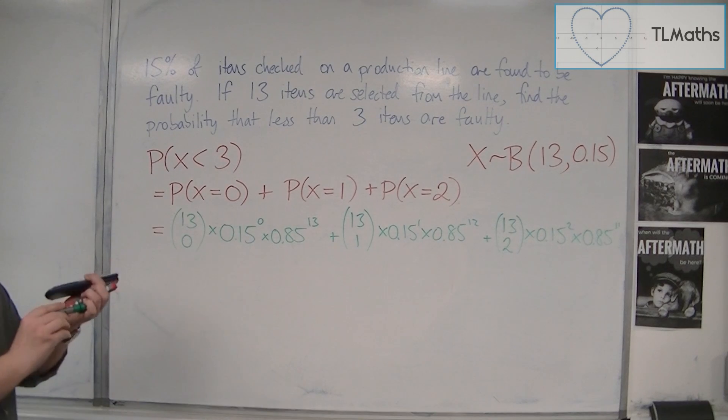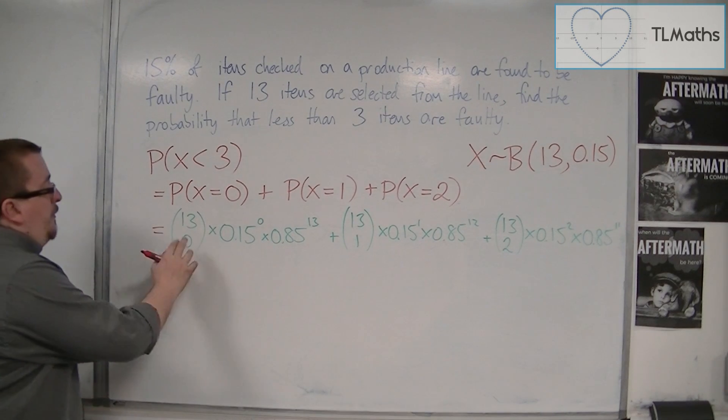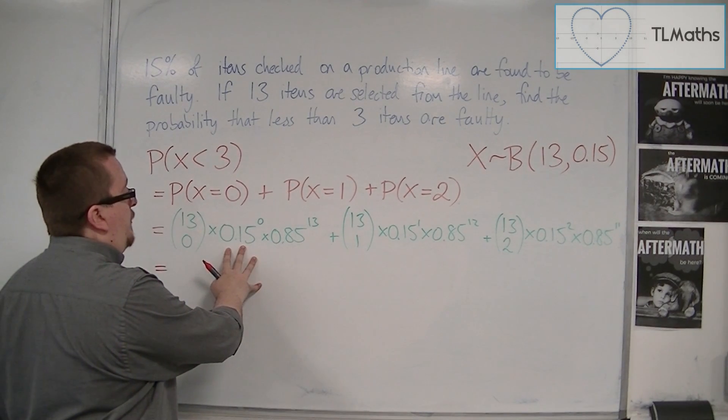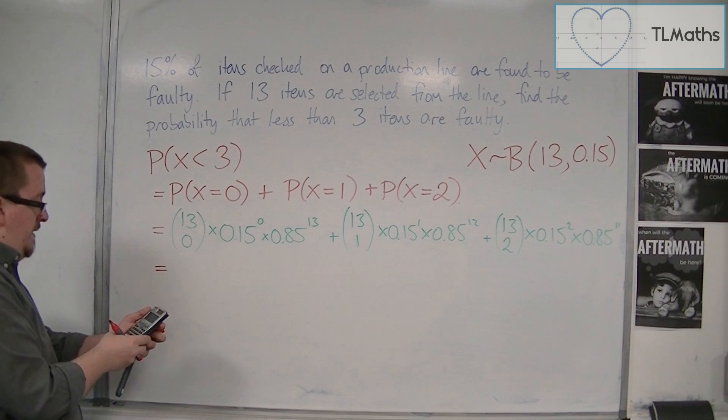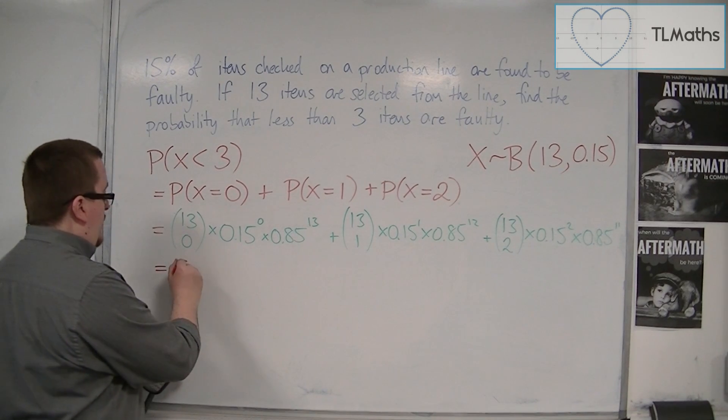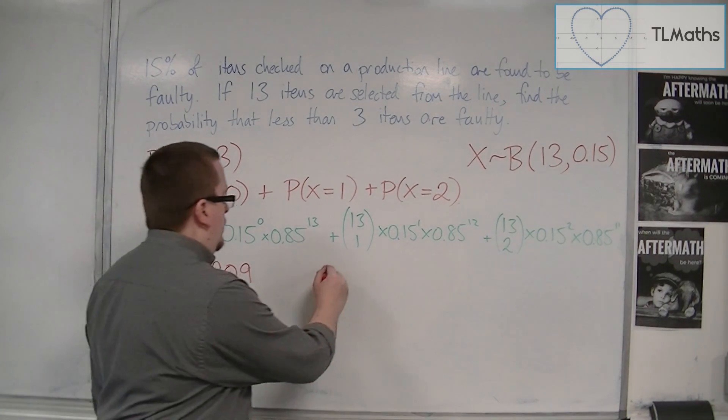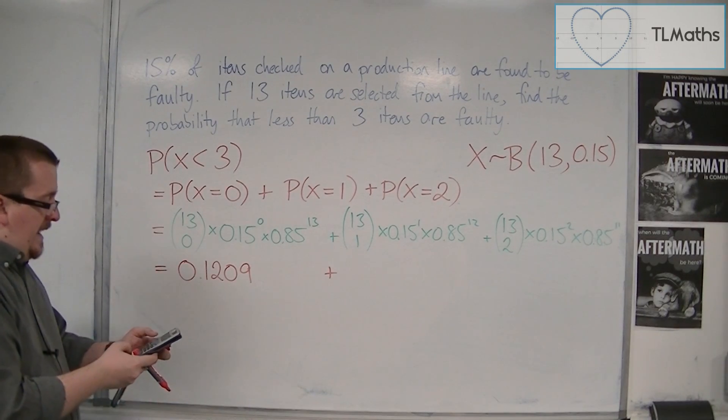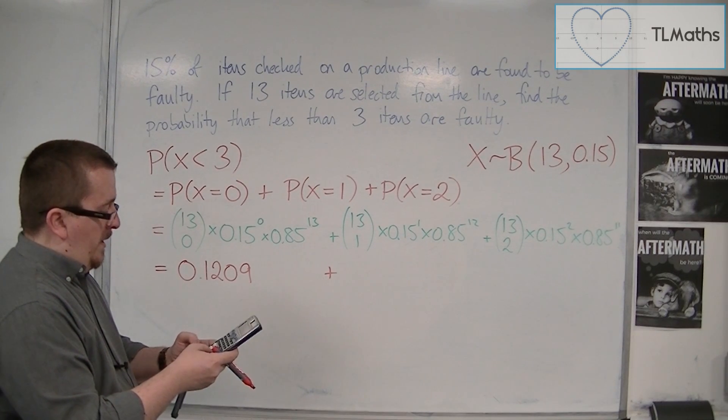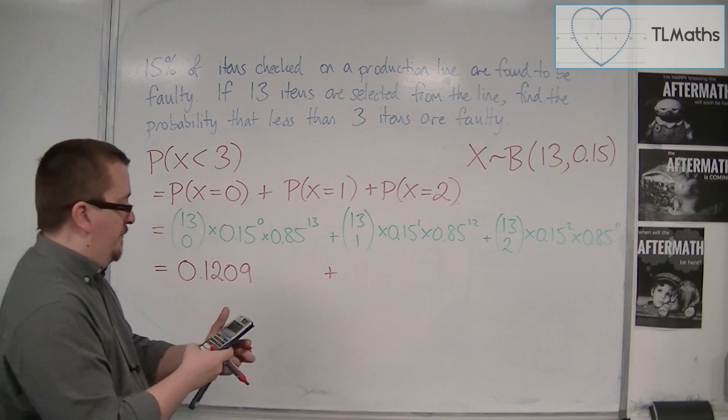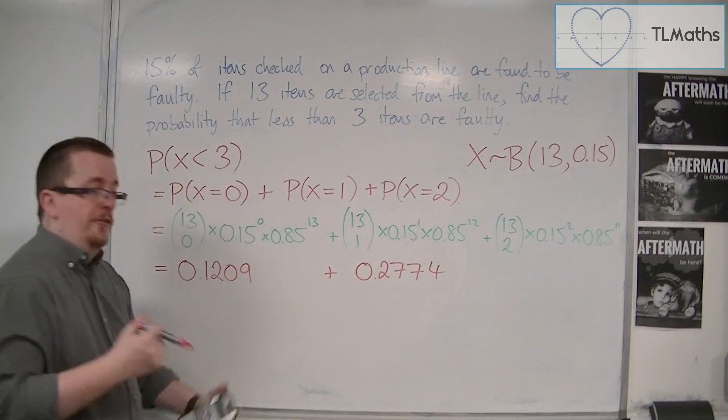So you can see that this calculation is quite large. Now, 13 choose 0 is 1, so is 0.15 to the power of 0. So we just have the 0.85 to the power of 13. So I'll write that down to 4 decimal places, 0.1209. Next, 13 NCR 1 times 0.15 times 0.85 to the power of 12, and I'll write that down to 4 decimal places.